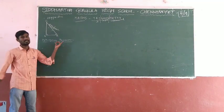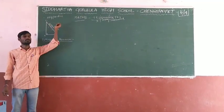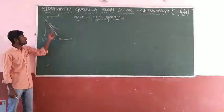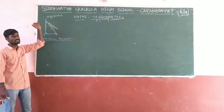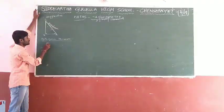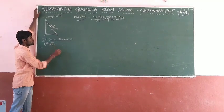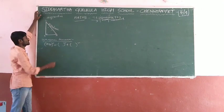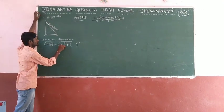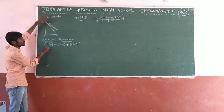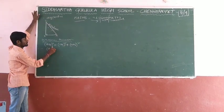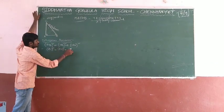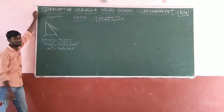According to Pythagoras theorem, the square of the hypotenuse is equal to the sum of the squares of the remaining two sides. So here, hypotenuse is AC. Therefore, AC squared equals AB squared plus BC squared, where AB and BC are the remaining two sides.